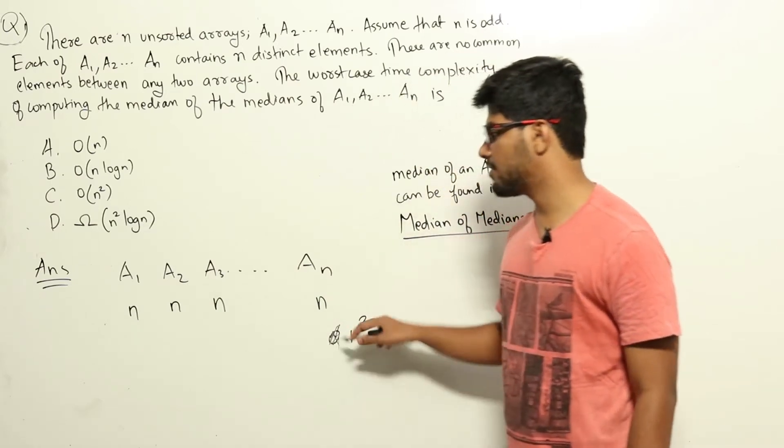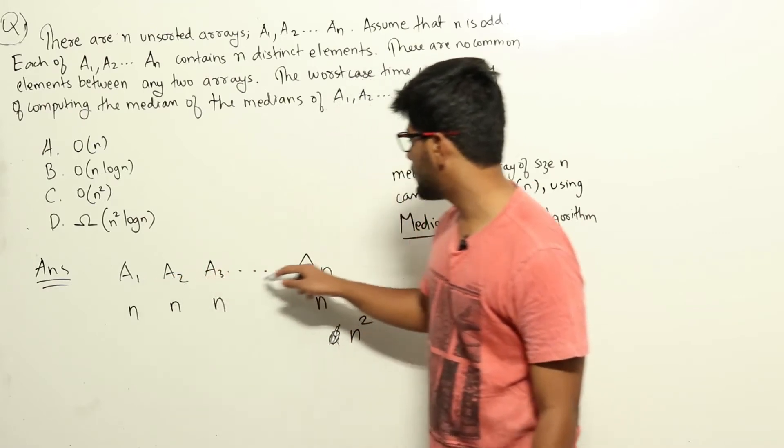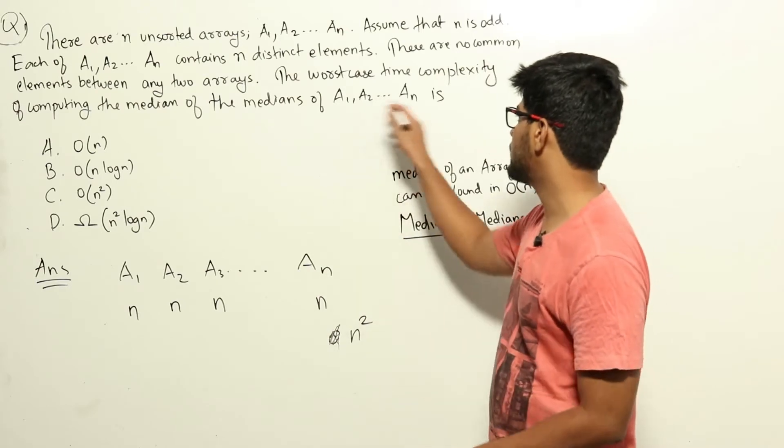There are n square elements in total in all of these arrays. And we need to find out median of each of these elements. And then after that, we need to compute the median of the medians of each of these arrays.